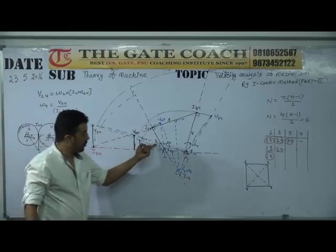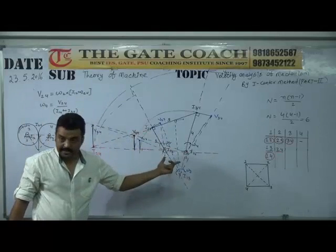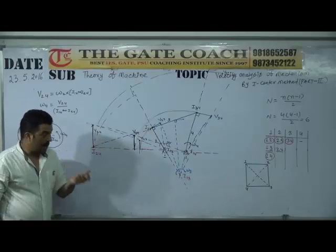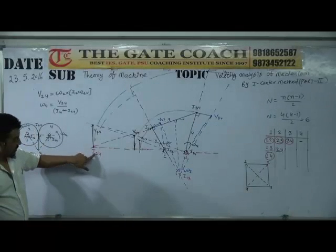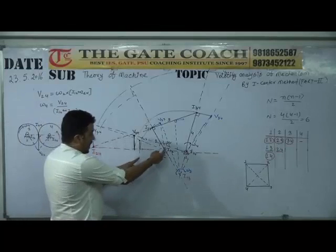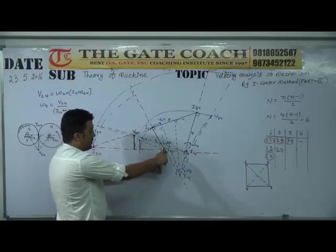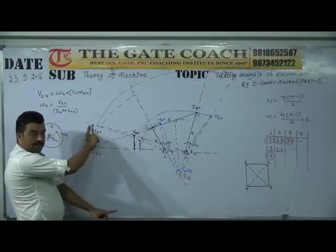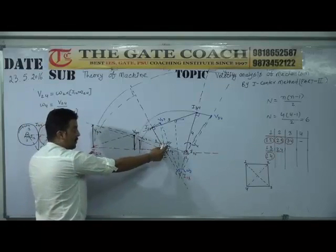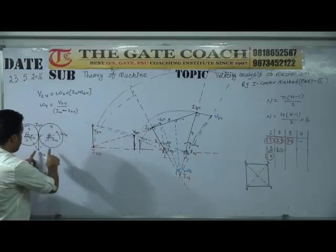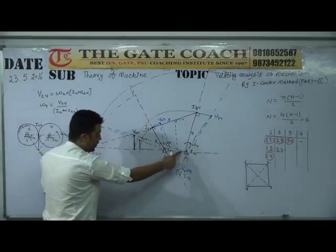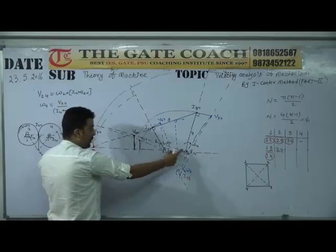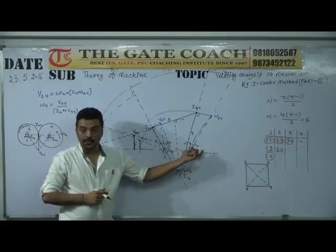In summary: if we know omega 2 and all distances, and want to calculate the angular velocity of link 4, we simply find where I₂₄ is. Then, omega 2 times the distance from I₁₂ to I₂₄ gives V₂₄. Since I₁₄ also satisfies V₂₄, and we know the distance between I₁₄ and I₂₄, we can directly calculate omega 4. This is the shortest route — no need to calculate omega 3.